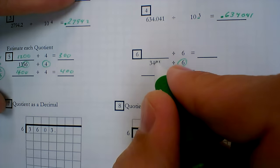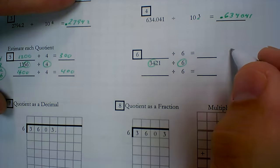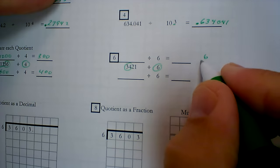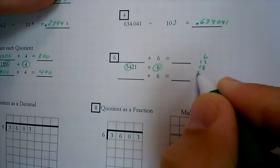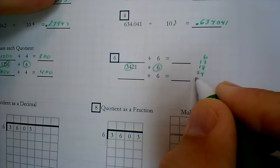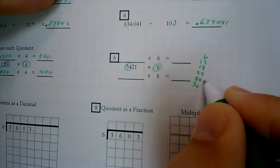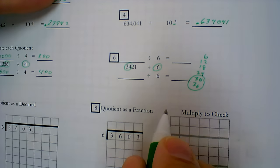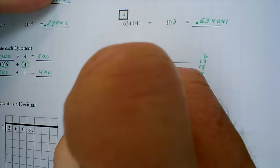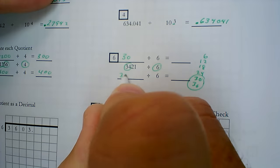Again, I'm going to count by sixes until I pass 34. 6, 12, 18, 24, 30, 36. So those are the two multiples I'm going to use. So I've got 30, 36.